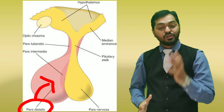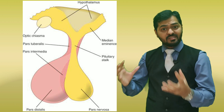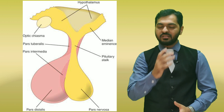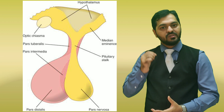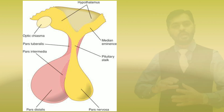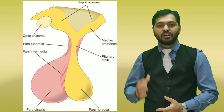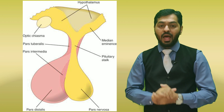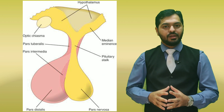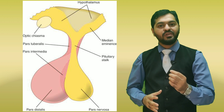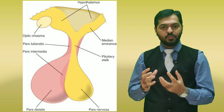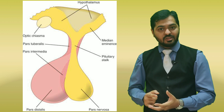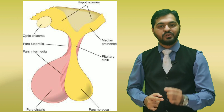The pars distalis is the part which secretes six major hormones. This lowermost major portion is composed of epithelioid secretory cells, which synthesize and secrete the pituitary hormones. Apart from this, the pars distalis consists of reticular connective tissue surrounded by blood-filled sinusoids. There is also entry of the hypophysial artery onto the anterior pituitary, which forms a capillary network that forms a vein — and this vein enters into the pars distalis, known as the hypophysial portal vein.